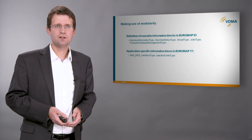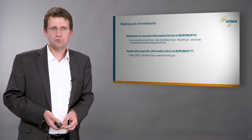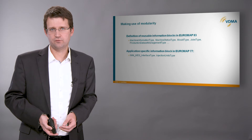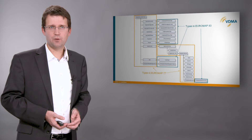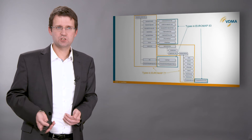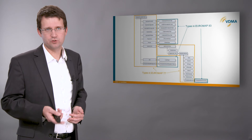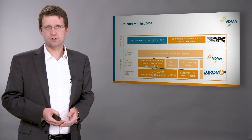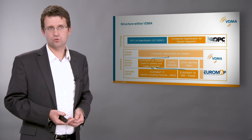As Euromap 77 is not the only specification for plastics and rubber machinery, a common structure became necessary. For this purpose, Euromap 83 was created. This includes requirements and type definitions that can be reused in the application-specific information models for different use cases. When looking at Euromap 77, most of the use types are now defined in Euromap 83. The definition of job and dataset management had been defined in a general way, so that it can be used for injection molding machines, but also for blow molding machines, extruders, or other machines. A special type definition in Euromap 77 then includes an injection unit type, because this is only relevant for injection molding machines. Within this type, all the components defined in Euromap 83 can be used, which is done here with the temperature zone type.